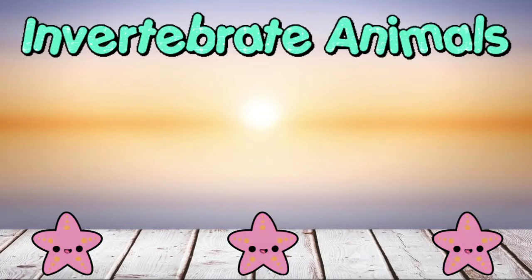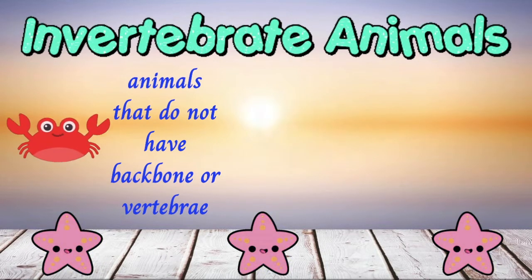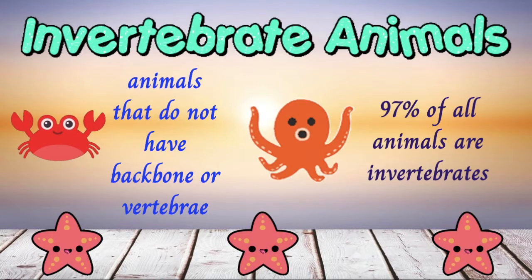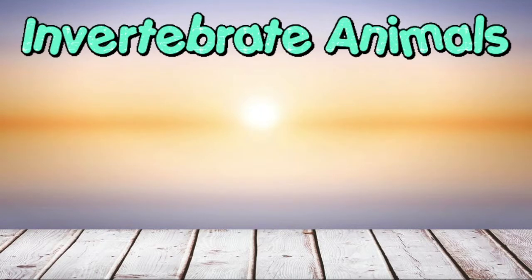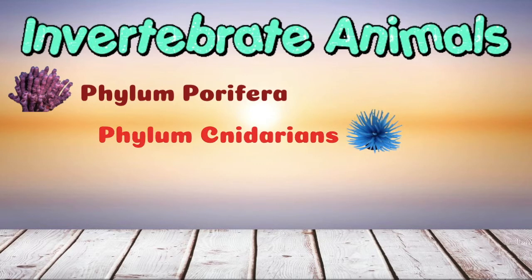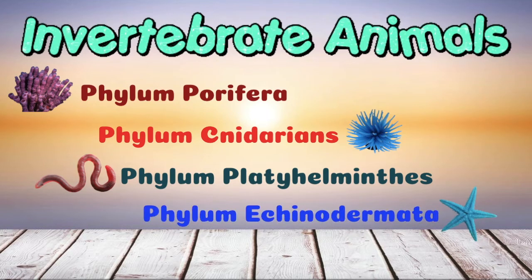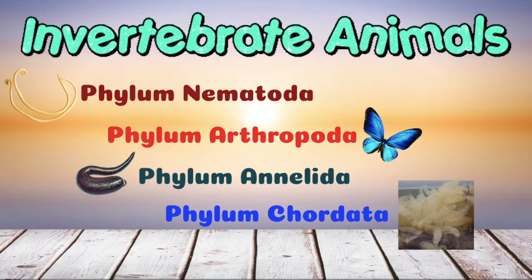Let's now learn about invertebrate animals. Invertebrate animals are the exact opposite of vertebrates — they do not have backbones. And 90% of all animals are invertebrates. Invertebrate animals are divided into nine groups: phylum Porifera, phylum Cnidarians, phylum Platyhelminthes, phylum Echinodermata, phylum Mollusca, phylum Nematoda, phylum Arthropoda, phylum Annelida, and phylum Chordata.